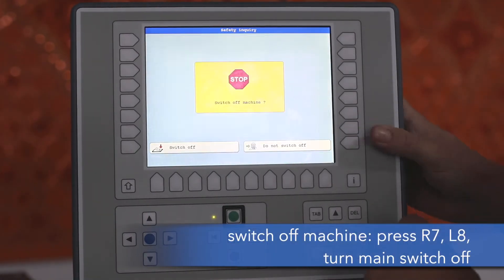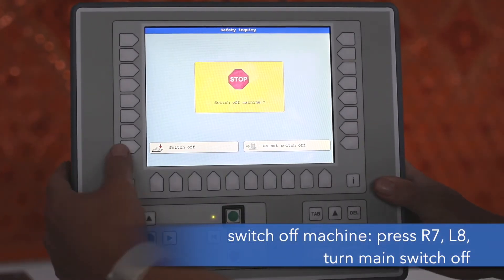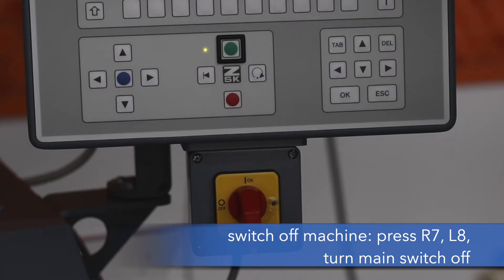Now we need to switch off the machine. Therefore we press R7, L8, and turn the main switch.